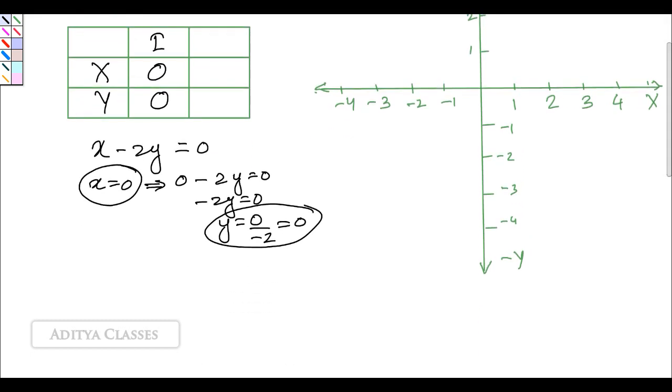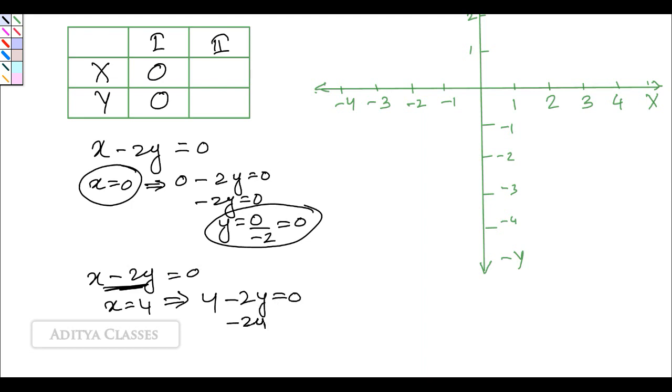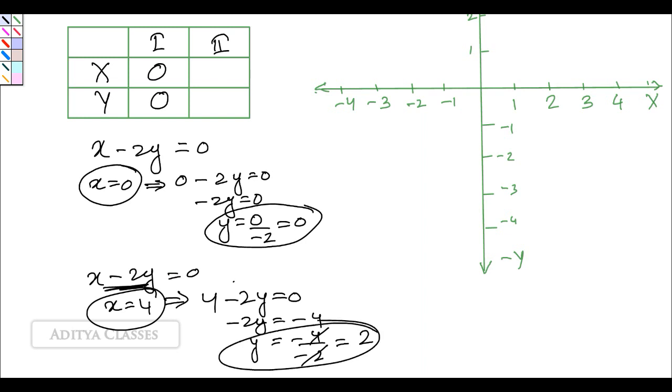To find our second coordinate, in x minus 2y I put x equals four. The equation becomes 4 minus 2y equals zero, or minus 2y equals minus four. So y equals minus four divided by minus two. These two cancel out and it becomes two. When x equals four, y comes out as two.